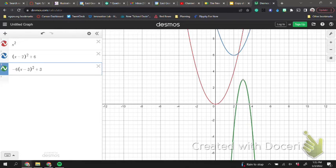So big idea. Inside these parentheses, shifting us left or right, constant, shifting us up or down. That's always giving us our vertex.